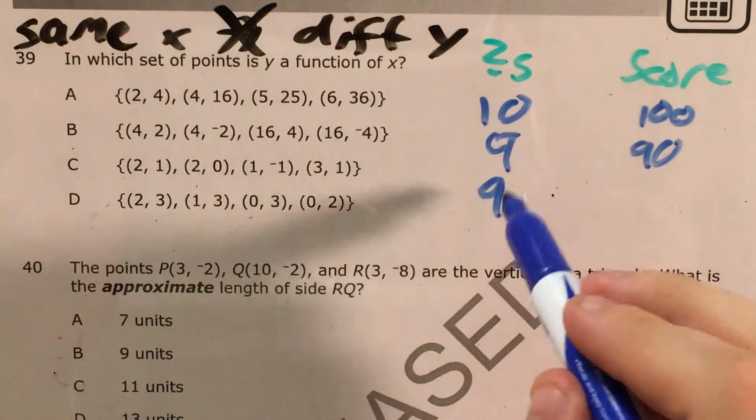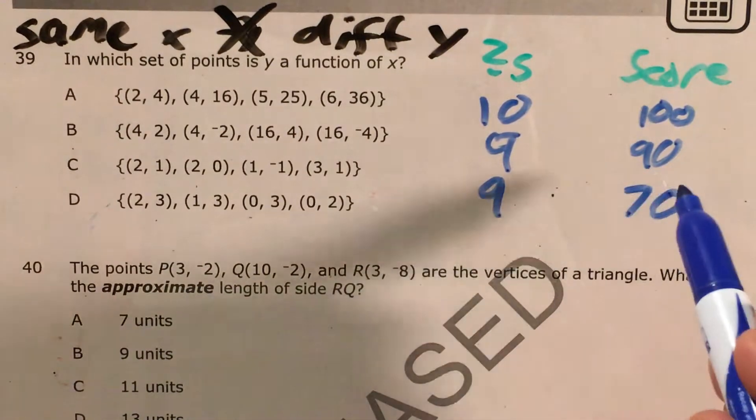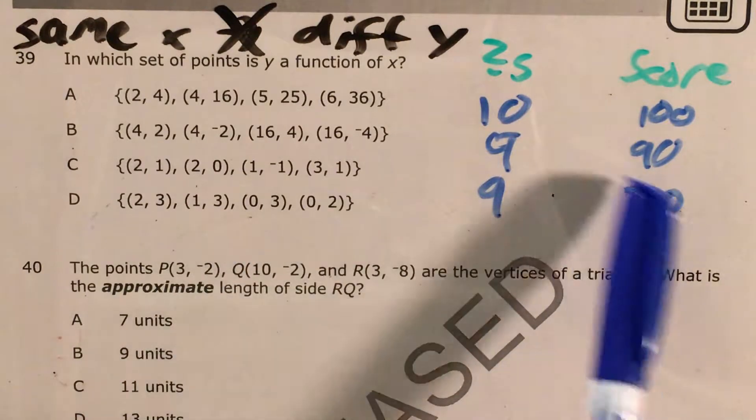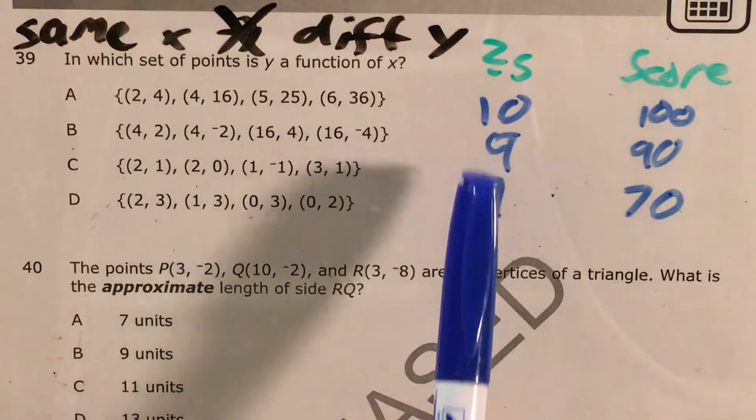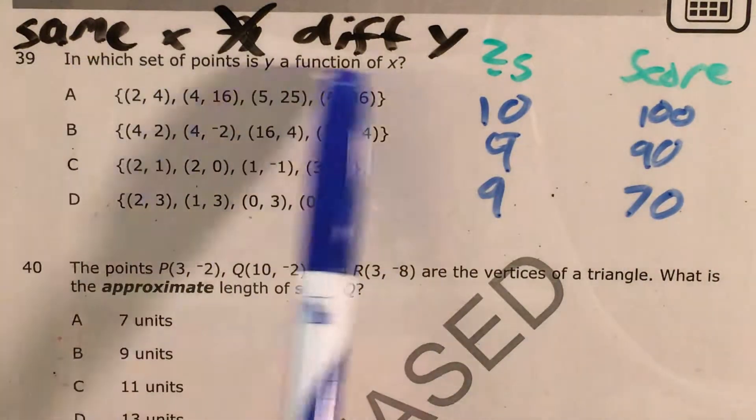But let's say someone else gets nine out of the 10 questions and they get a 70. Now you would reasonably think, wait, something's up with this. The same number of questions should not give me different scores. And that's the same idea for a function.